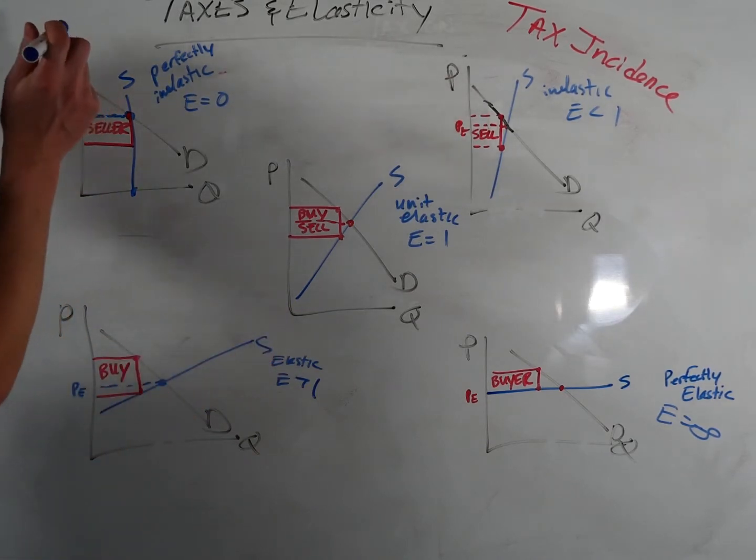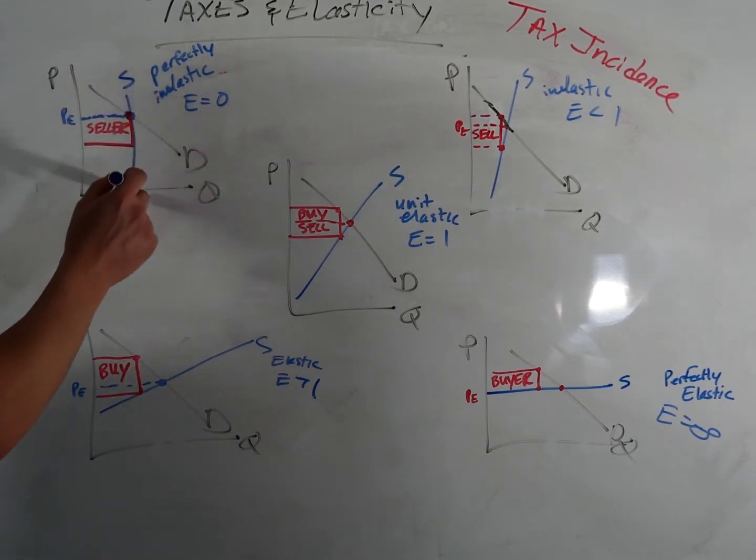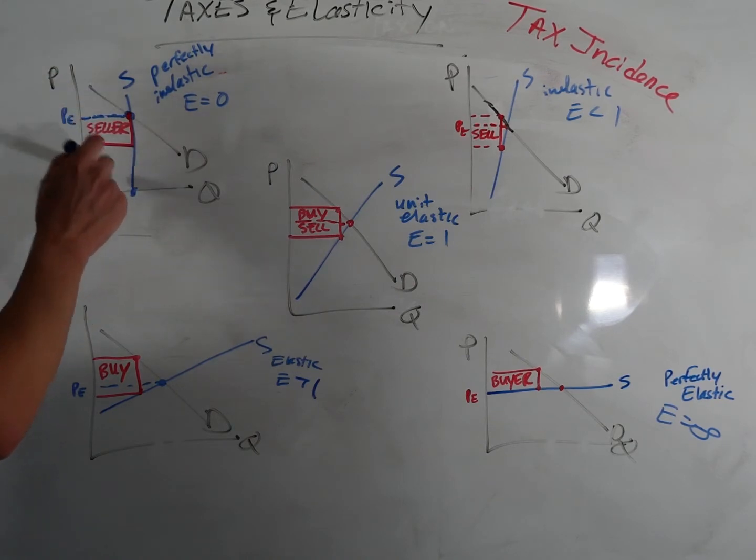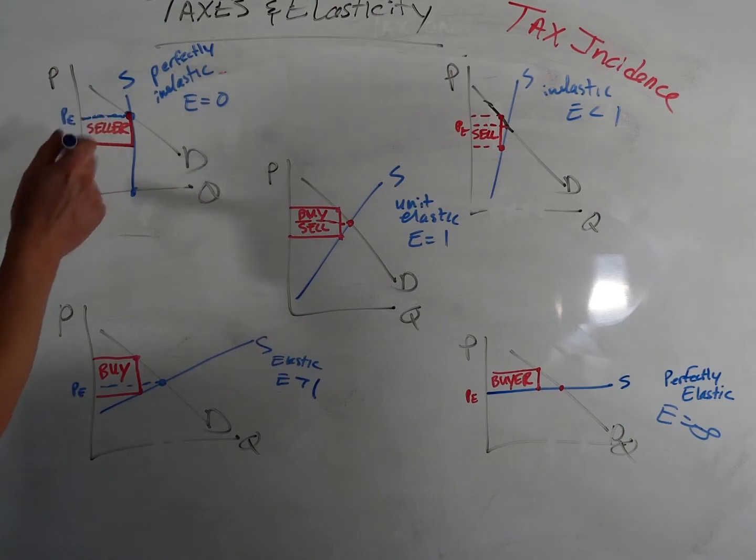Let's get after it. Perfectly inelastic, E equals zero. Supply is not moving. They'll supply that no matter what, at whatever price. If there's a tax, they're going to pay all of it.